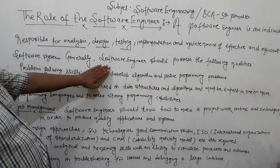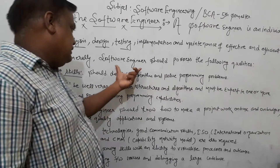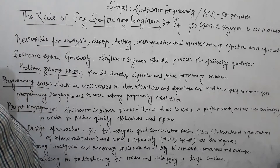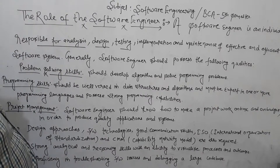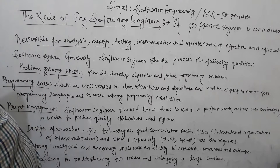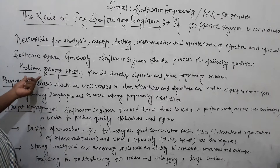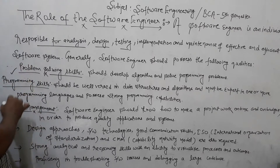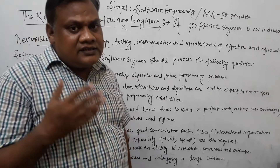Generally, software engineers should possess the following qualities. So now we have some main qualities of software engineers that we are going to discuss. First of all, problem solving skills — most important. Software engineers should have good analytical skills.